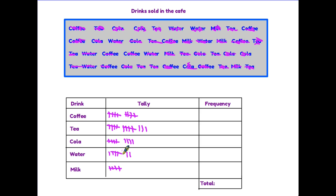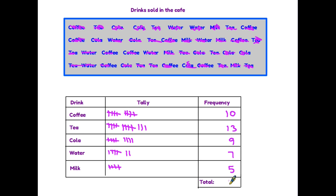Your second job is to turn the tally chart into a frequency table by using the column at the end and simply adding up the number of each drink. Coffee: there were ten sold. Tea: thirteen. Cola: nine. Water: seven. Milk: five. Our final task is to add up all the drinks, and if we total the numbers we come to 44. We now have a completed frequency table.